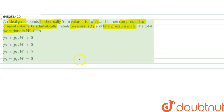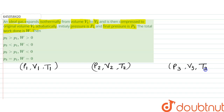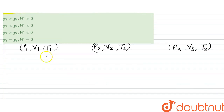Let us say initially we have state (p1, v1, t1). In the second stage we have (p2, v2, t2), and in the third stage we have (p3, v3, t3).